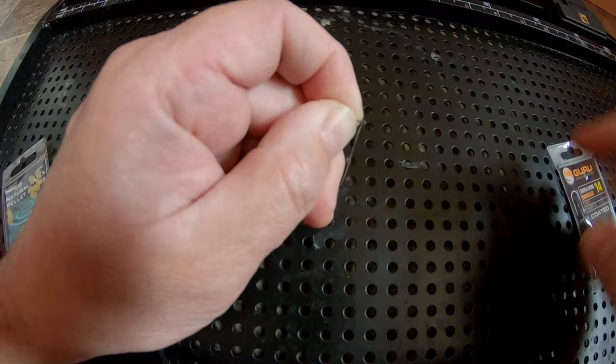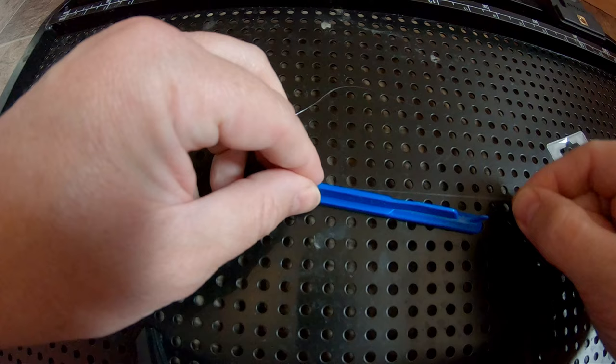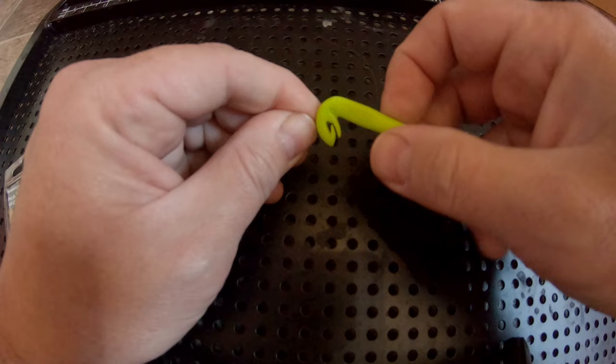Finish the hook length off by measuring your desired length to fit in your box and then tie a figure of 8 loop on the other end. I'm using a loop tie here just to make the whole process a lot easier.